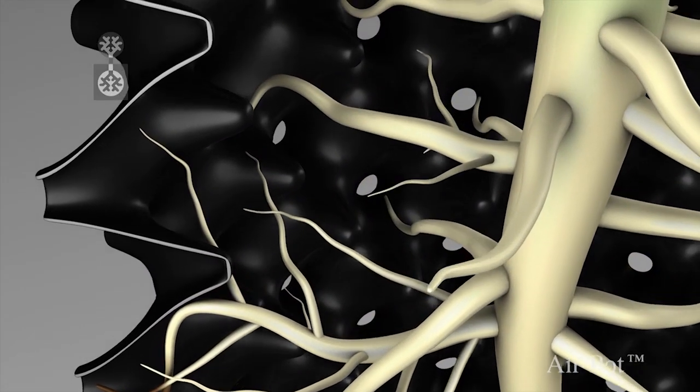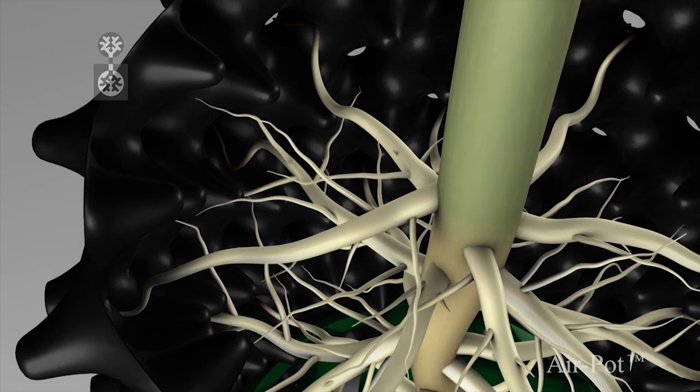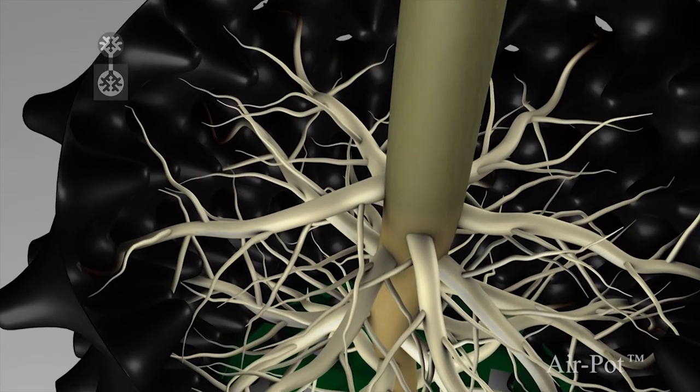As each new root finds its way to an airhole, the process is repeated, and the plant rapidly develops a mass of outward-pointing, fibrous roots.